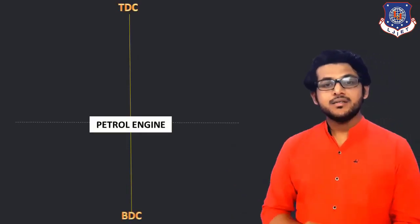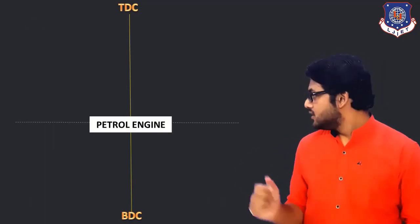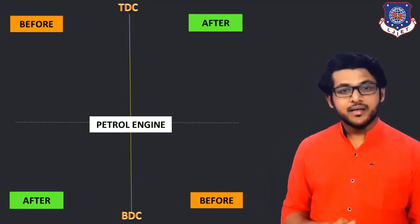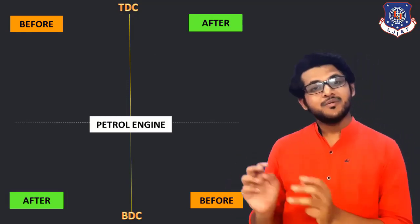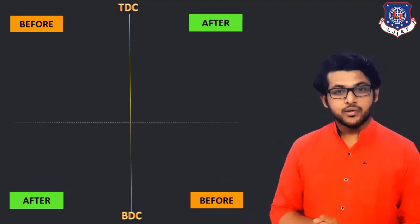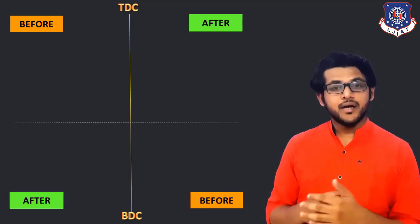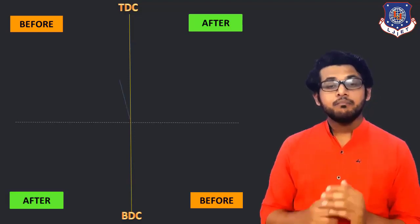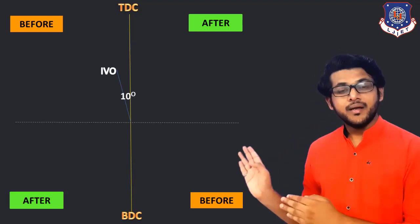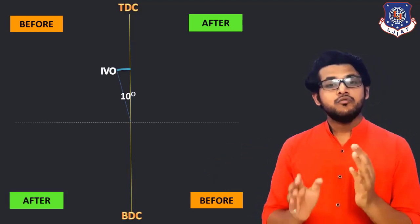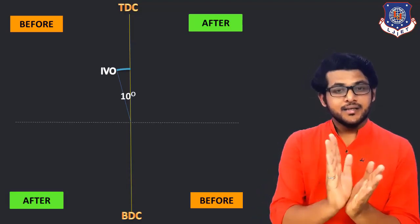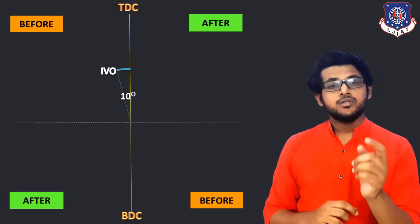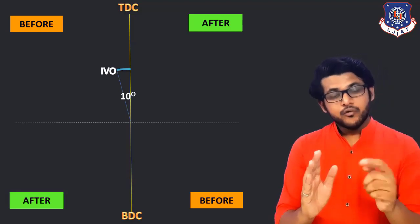Let's see the actual Valve Timing Diagram. It is TDC and it is BDC — we are drawing this for the petrol engine. We will draw a horizontal reference line and a vertical line for TDC and BDC. There are four tags — two are after and two are before TDC/BDC. Starting from the first stroke, the suction stroke: we will open the inlet valve before TDC, let's say 10 degrees before TDC.